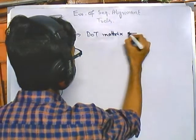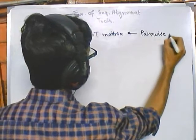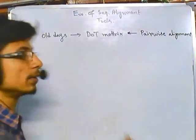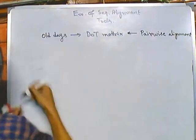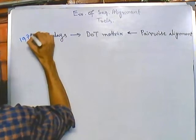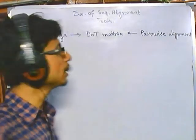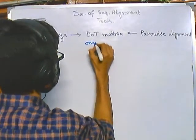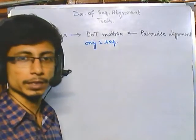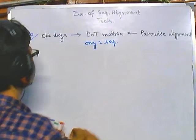This dot plot depends upon pairwise alignment. This dot plot and pairwise alignment was discovered or invented during the 1970s. So in the 1970s we had this old dot matrix plot using pairwise alignment, and only two sequences are aligned at a time during this period.